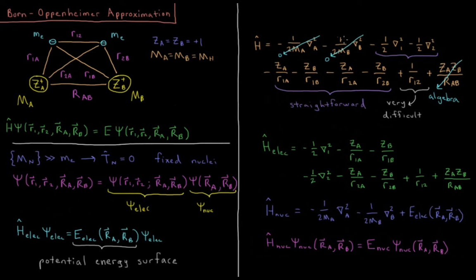Our total Hamiltonian contains: kinetic energy of nucleus A, kinetic energy of nucleus B, kinetic energy of electron 1, kinetic energy of electron 2, attraction of electron 1 to nucleus A, attraction of electron 1 to nucleus B, attraction of electron 2 to nucleus A, attraction of electron 2 to nucleus B, repulsion between the two electrons, and repulsion of the two nuclei.